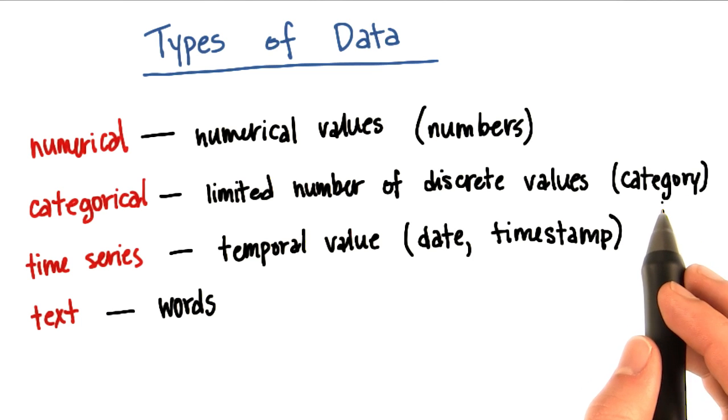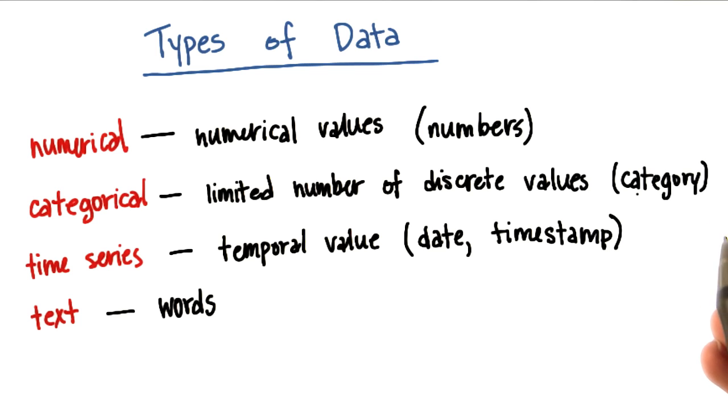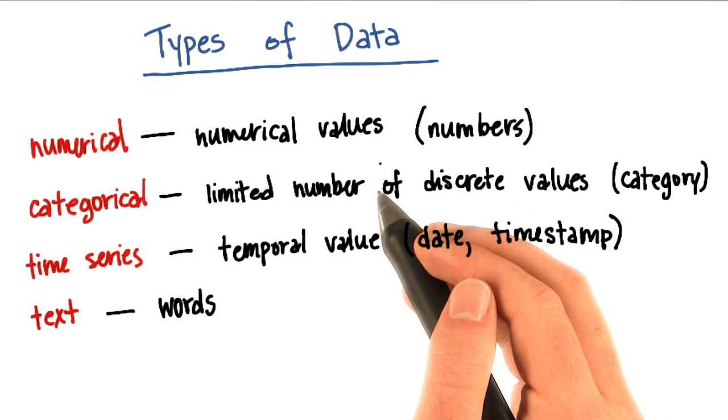This would also be something like if a person is a man or a woman, or maybe how many stars you give when you're rating a movie. All those stars, you might argue, could also be called a numerical value.